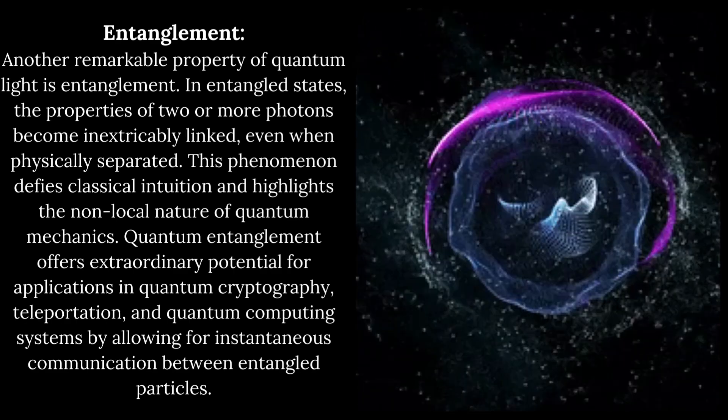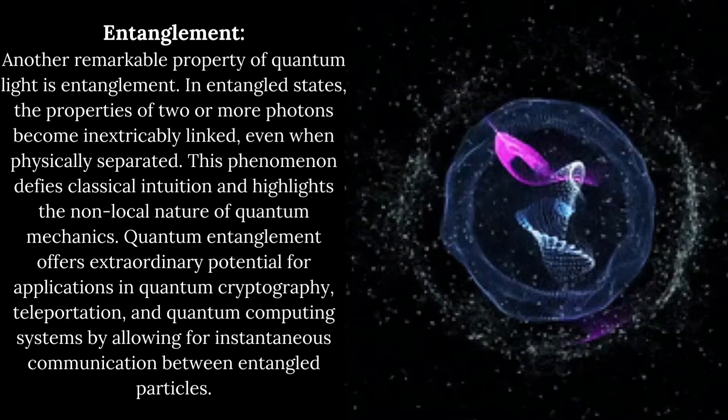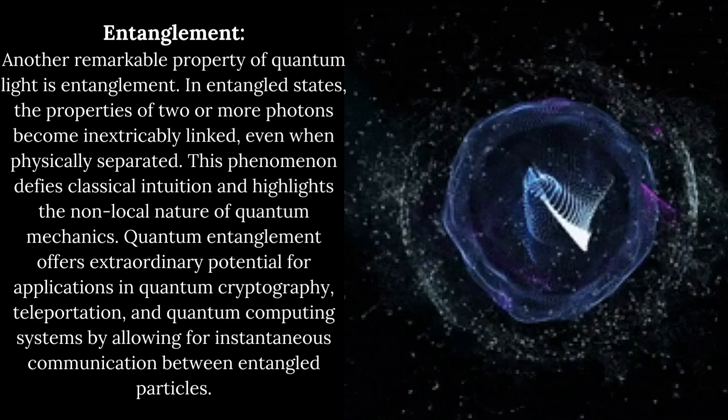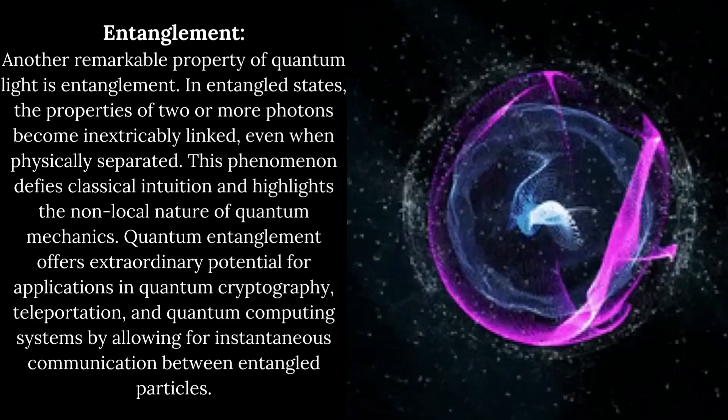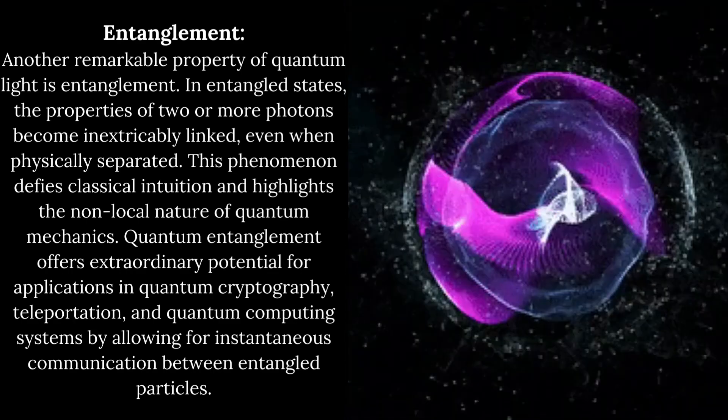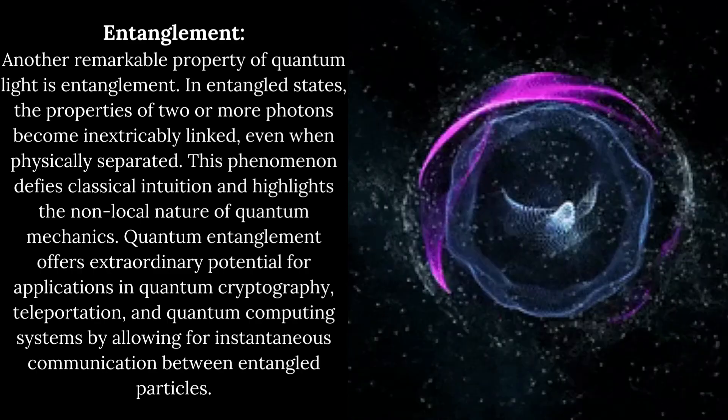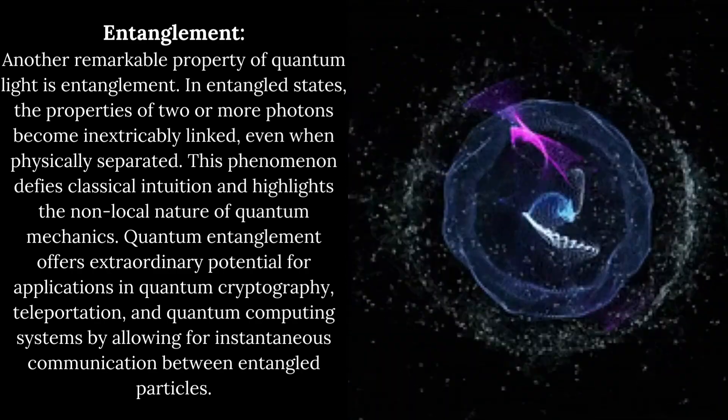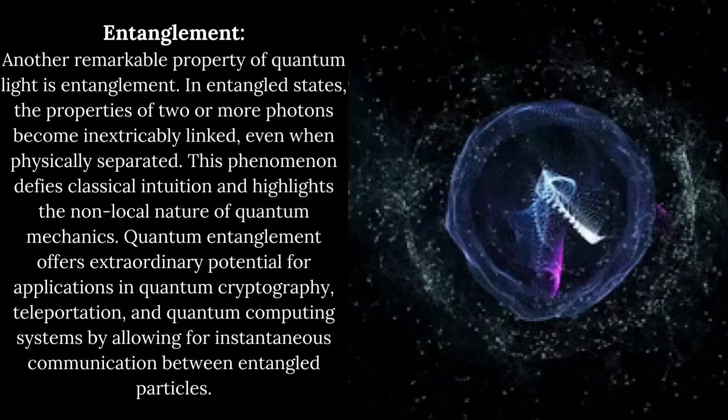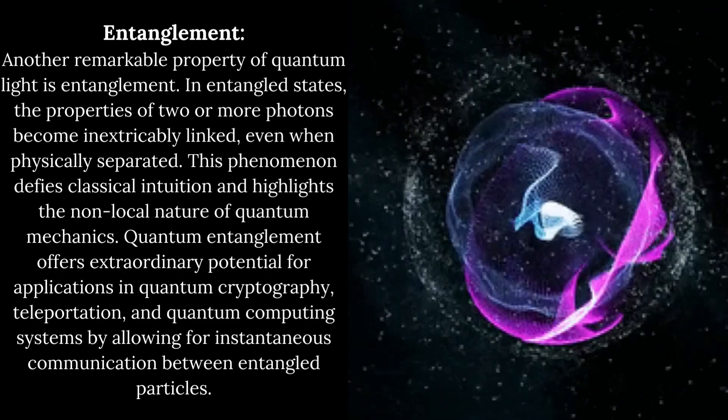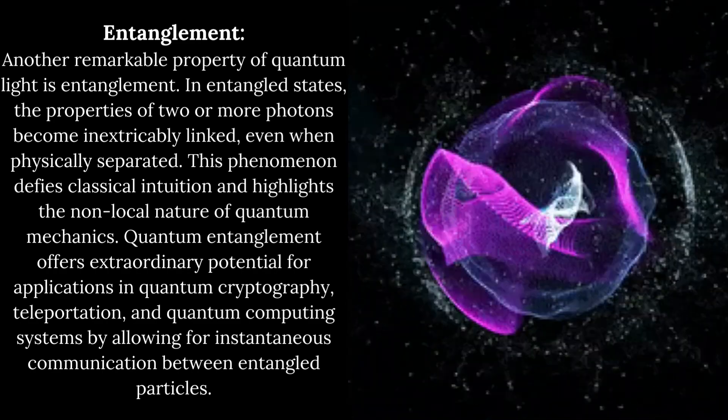Entanglement: Another remarkable property of quantum light is entanglement. In entangled states, the properties of two or more photons become inextricably linked, even when physically separated. This phenomenon defies classical intuition and highlights the non-local nature of quantum mechanics.